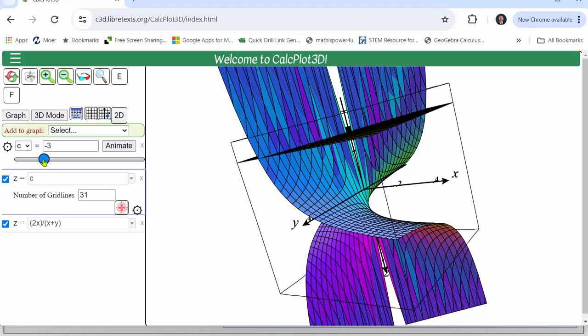So here's a plane. Again, every time this plane cuts the surface, it creates a level curve.